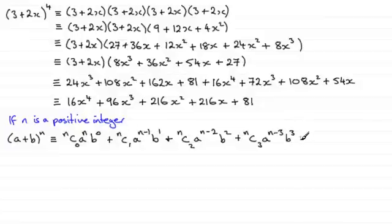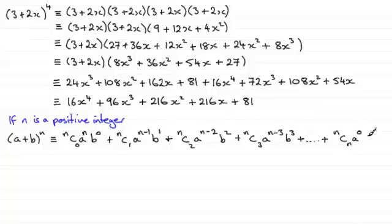It's going to go on like this until we get to the last term, which is going to be nCn, then a to the power (n − n) — in other words a to the power 0 — and b will go up to b to the power n.